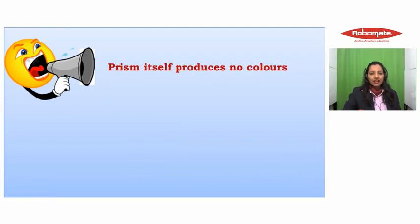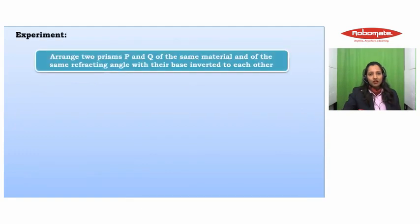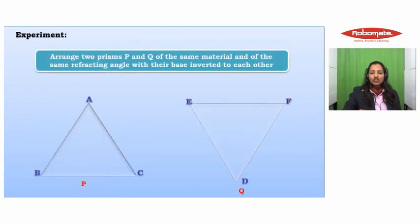A very important point to note is that the prism itself produces no color. This can be demonstrated by the following experiment: arrange two prisms P and Q of the same material and of the same refracting angle with their bases inverted to each other.